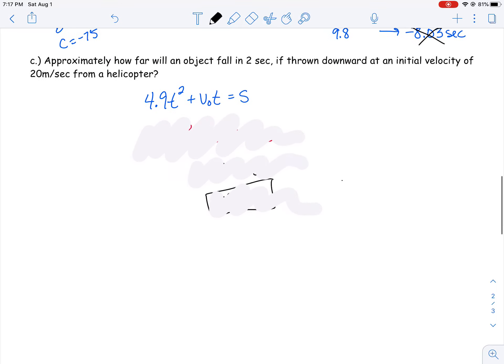All right, last one here. Part c: approximately how far will an object fall in two seconds if thrown downward with an initial velocity of 20 meters per second from a helicopter. This one gives us different information. We know the time equals two seconds. We know the initial velocity is 20 meters per second. Let's plug that in for our v₀ and plug in two for our time t. Then let's solve for s and figure out the distance. When I did that, s was already isolated on that right side. So all I have to do is use the order of operations. I can square, multiply, add and subtract, and simplify that left side.